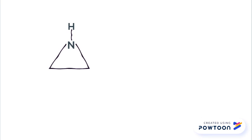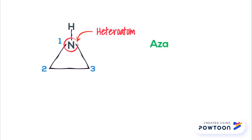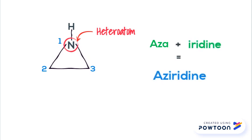Now, we need to look at the heteroatom, which is nitrogen. The prefix for nitrogen is 'aza'. Now we will count the ring size, which is 3. The suffix for a 3-membered ring is 'iridine', as you all know. Now we combine 'aza' and 'iridine', giving us the name aziridine.